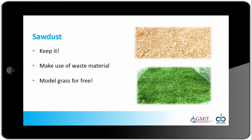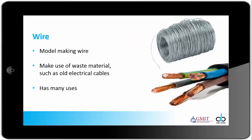Sawdust — I recommend you keep it. Keep every little bit of sawdust you can get your hands on; we have to make as much use of waste material as we can. In a later video tutorial I will show you how to model grass from sawdust for absolutely free. Wire — model making wire. Make use of this waste material as well. Insulated cables that get thrown out of houses being refurbished can often be found. Keep a hold of some of this wire because it's very handy for supporting parts of your model.